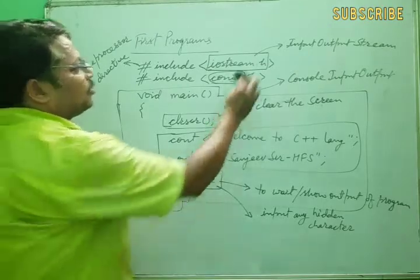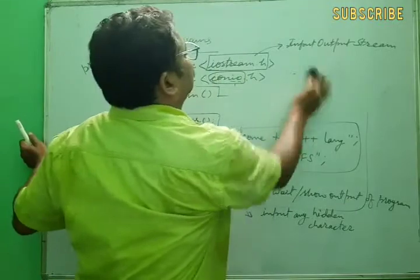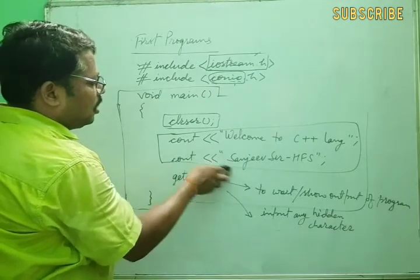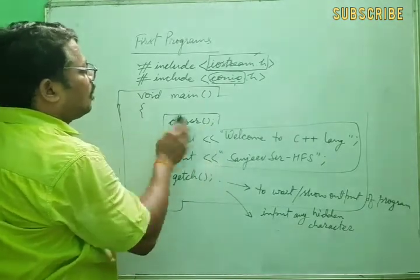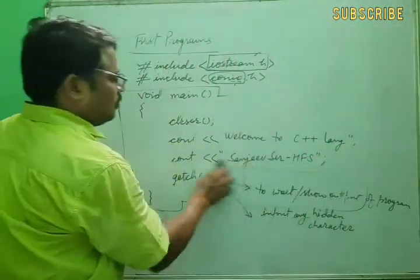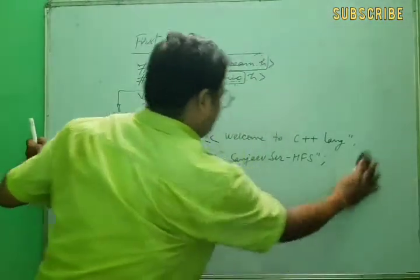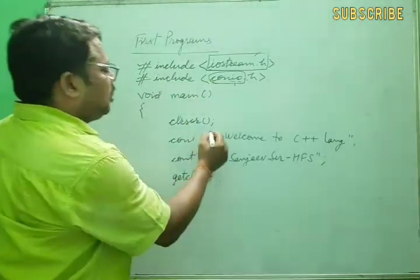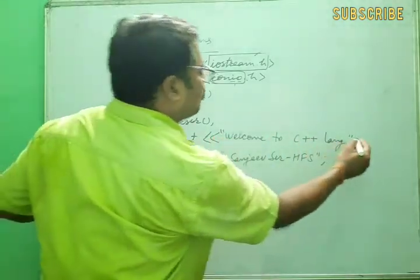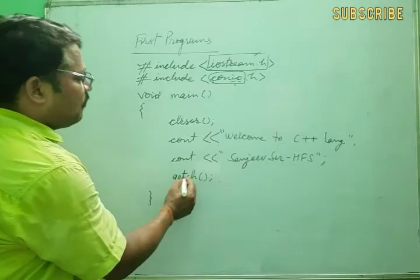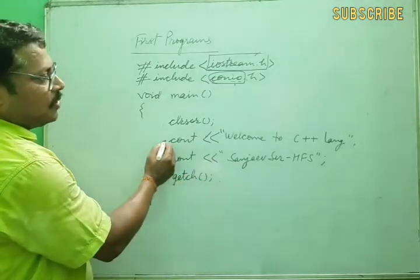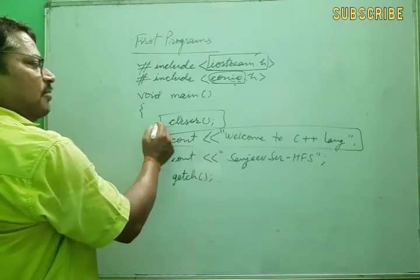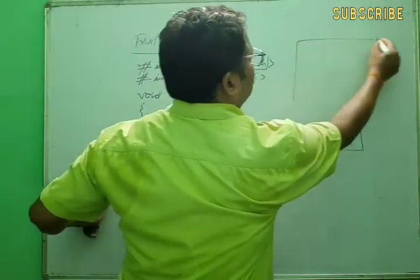Now if we execute this program, we will see the output. Whatever is written in the program — for example, in double quotes after cout: 'Welcome to C++ language' — when this program executes, the output screen will be displayed. The first line executes, then line by line each statement executes. First, clrscr clears the screen.